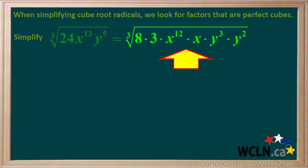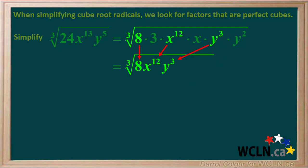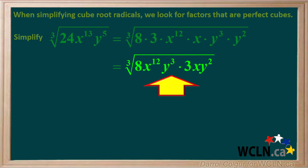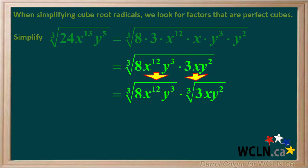Now we're left with this expression. We'll write the perfect cubes — 8 times x to the 12th times y to the 3rd — together on the left side of the radicand, and the leftovers — 3 times x times y squared — on the right. So we're left with this expression, and we'll split the single cube root into the cube root of the perfect cubes 8x to the 12th y to the 3rd times the cube root of the leftovers 3xy squared.